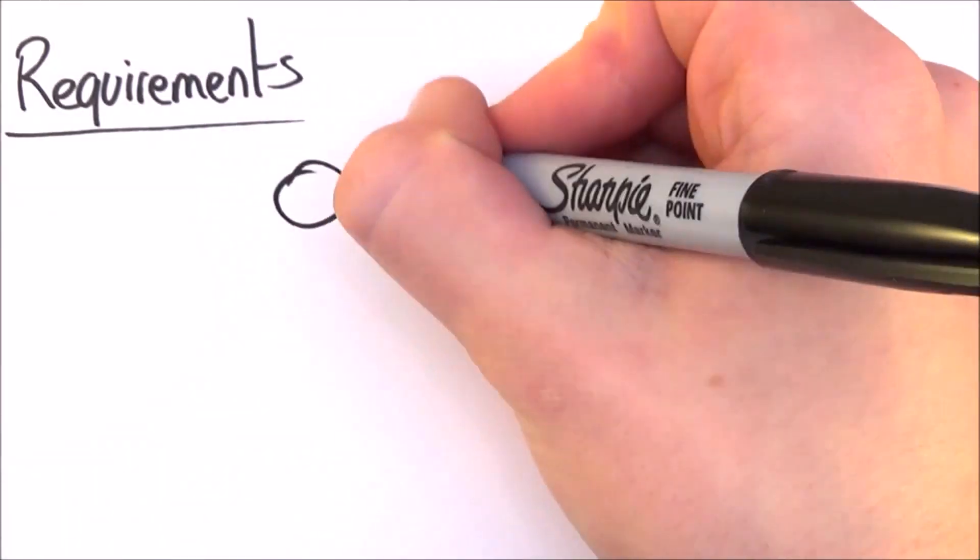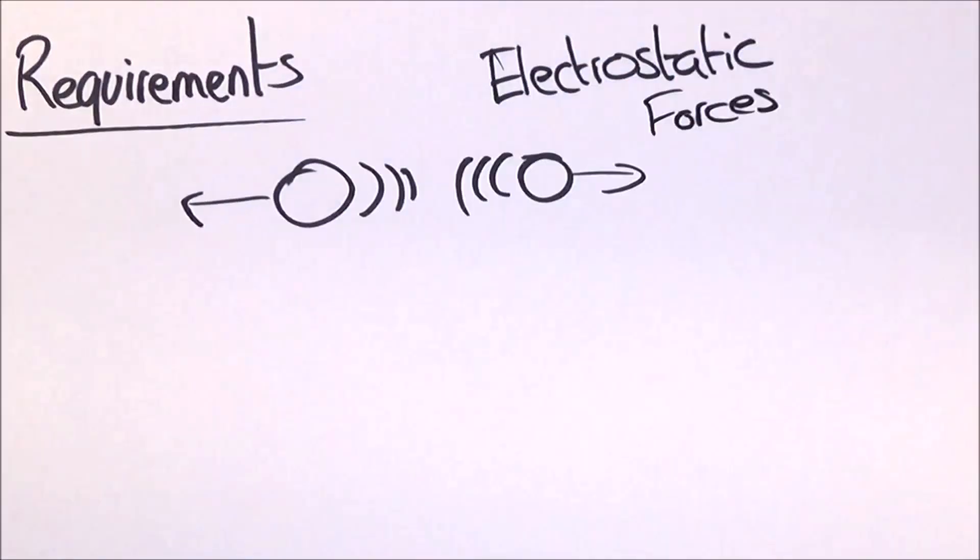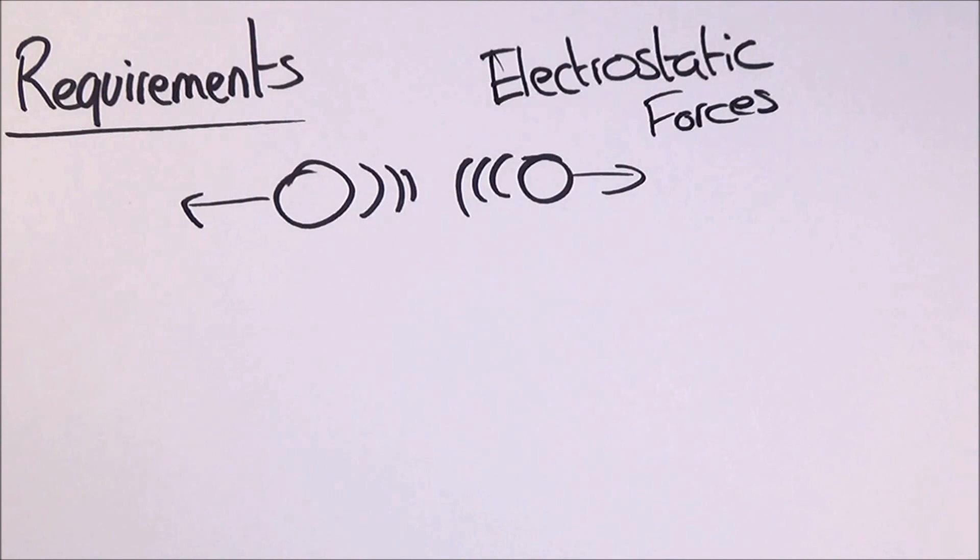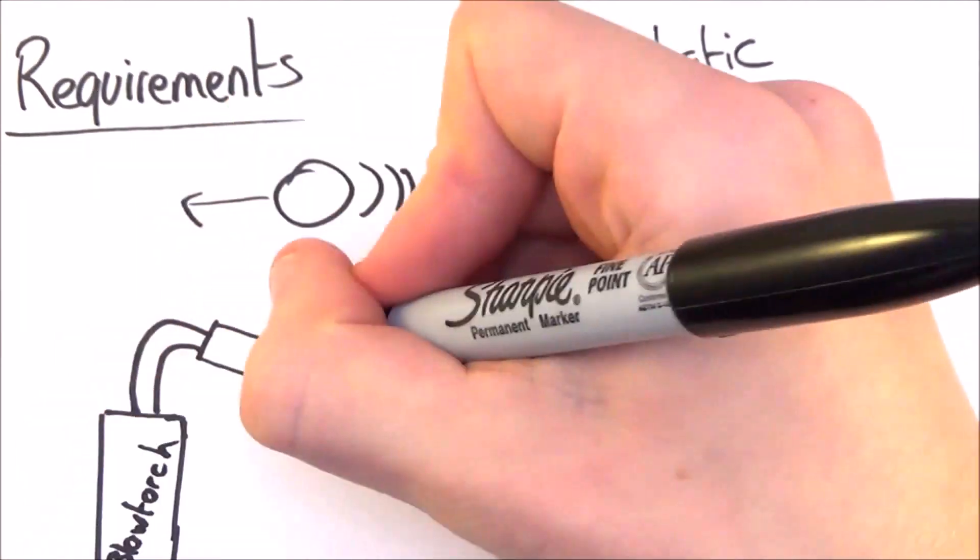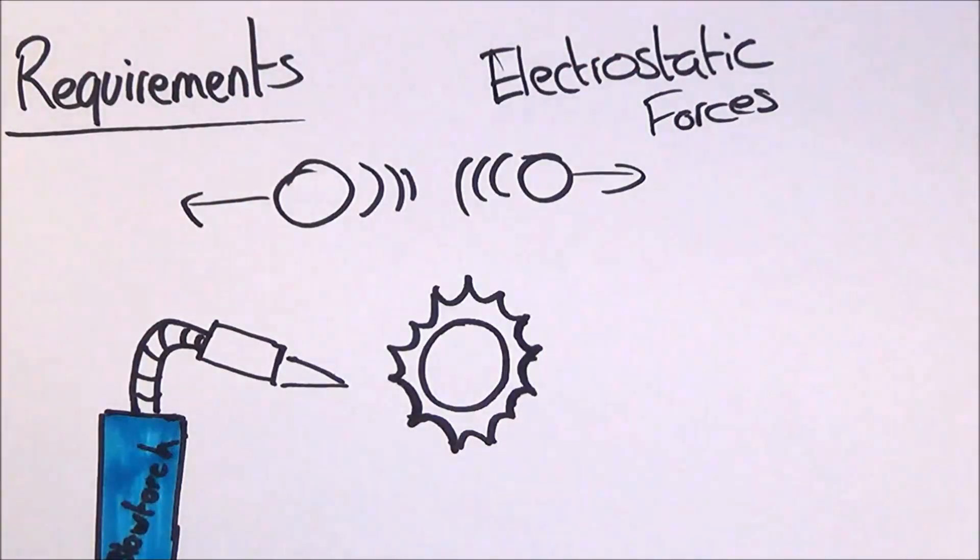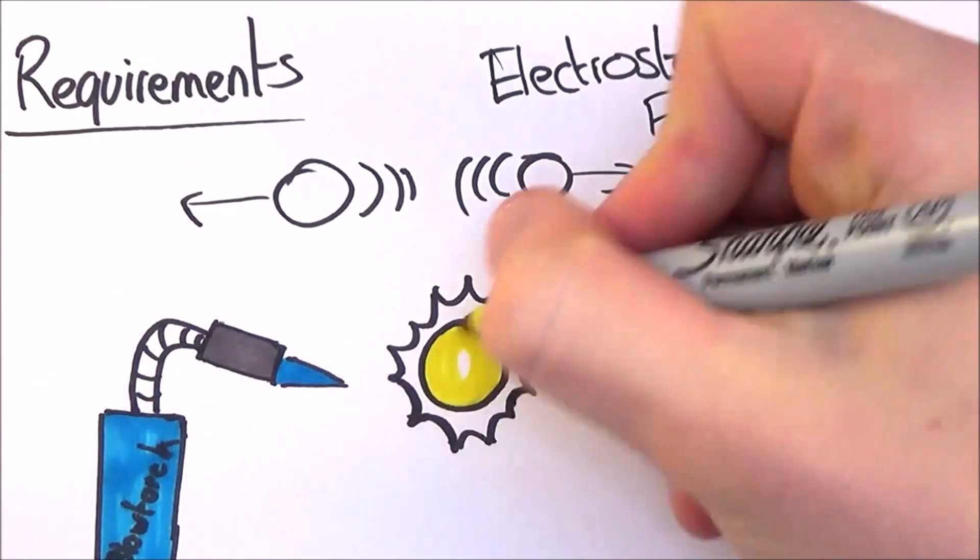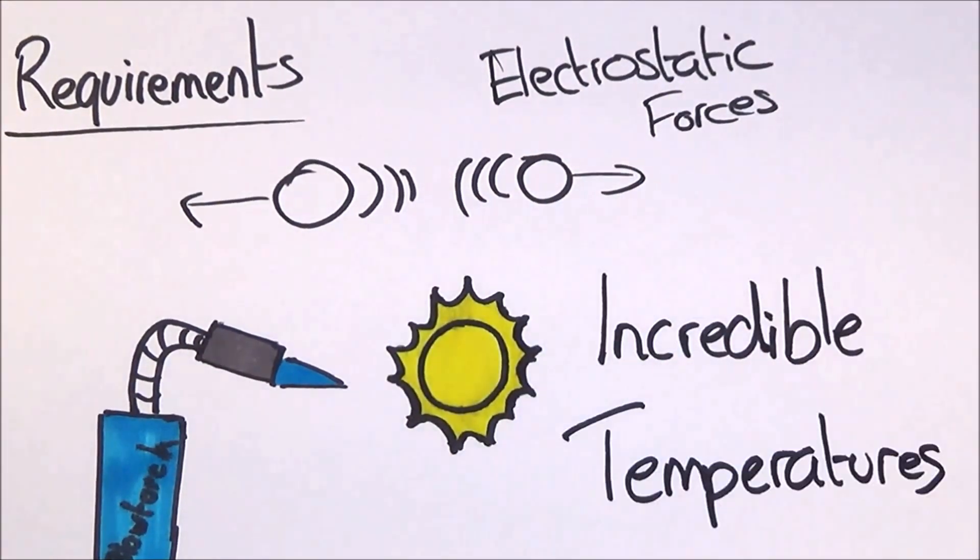There are requirements for nuclear fusion. For example, there is a substantial energy barrier electrostatic force which must be overcome. At large distances, atom nuclei will repel each other, and this gets stronger as they get closer together. So a lot of force is needed to overcome this. It can only be done at temperatures that are incredibly high, and that's why the probability is so low.